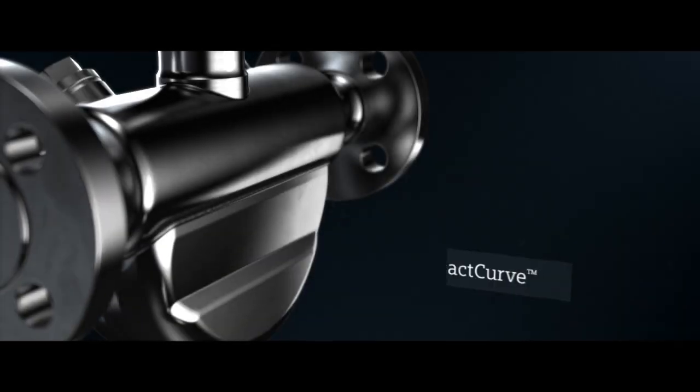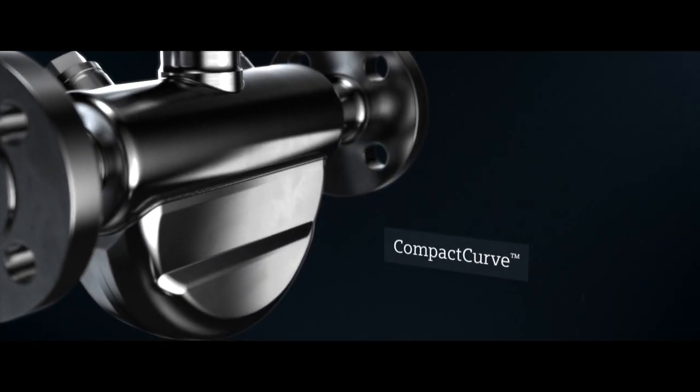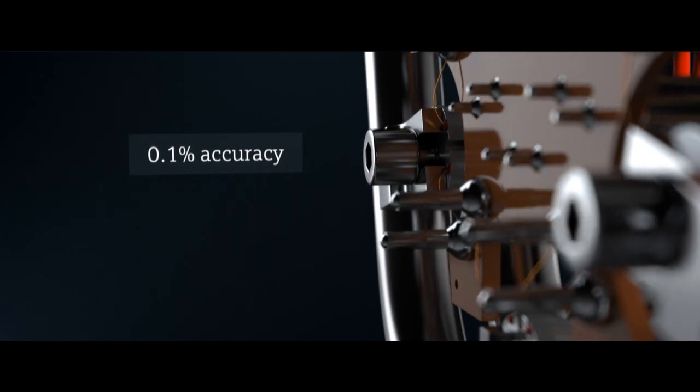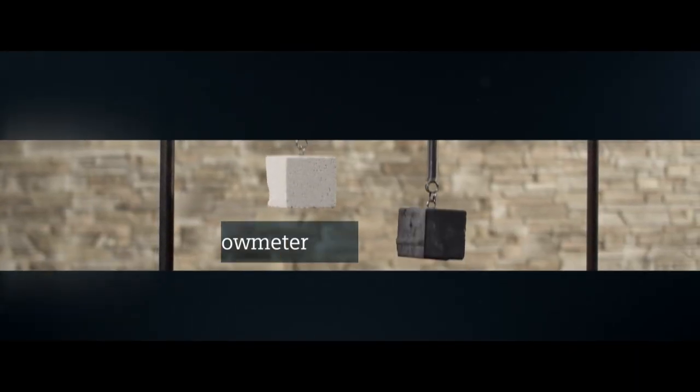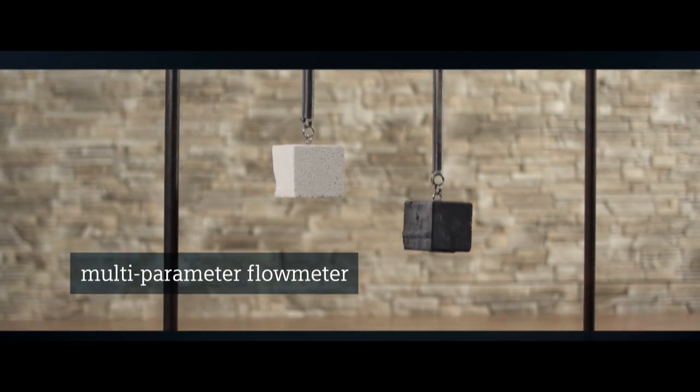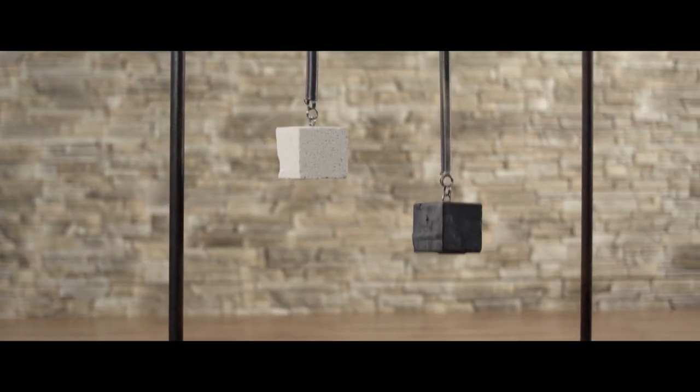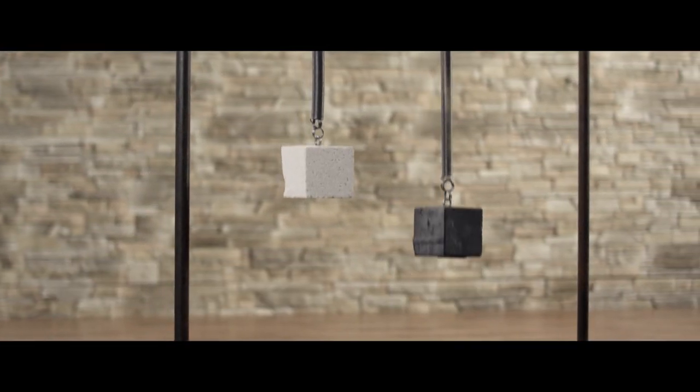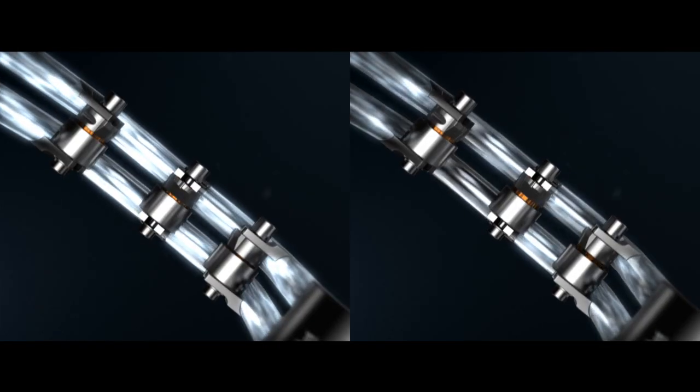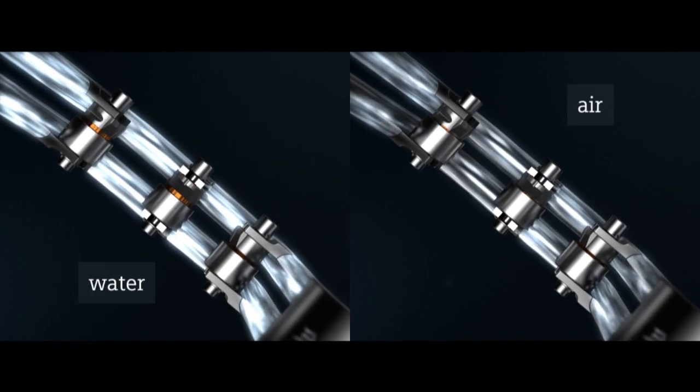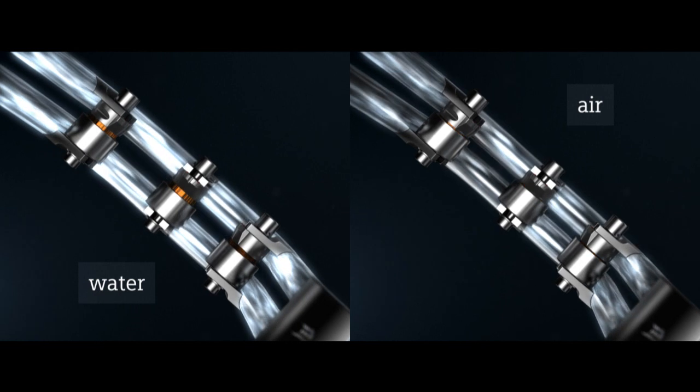A multi-parameter flow meter with maximum reliability. In addition to the mass, it determines the density of a medium. Denser media have lower frequencies. Put otherwise, water oscillates at a lower frequency than air.